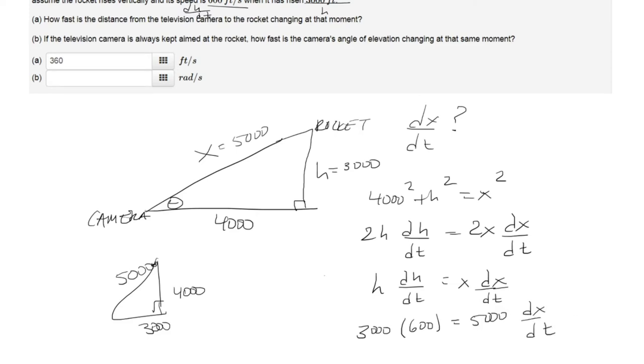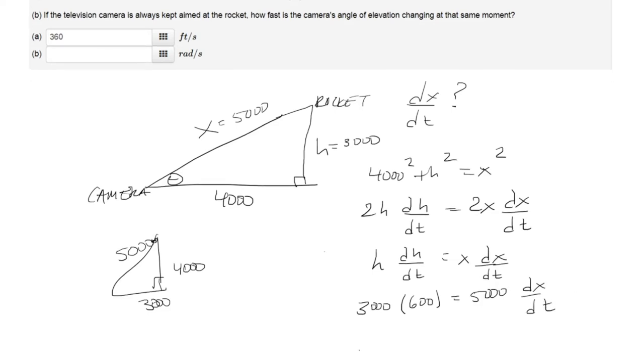And then dx/dt, so I can solve for dx/dt to be 360 feet per second. So that's part a.